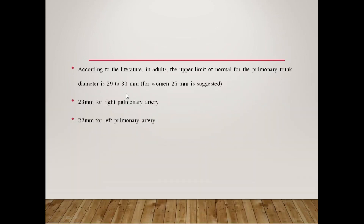According to the literature, in adults the upper limit of normal for the pulmonary trunk is 29 to 33 mm, 23 mm for the right pulmonary artery, and 22 mm for the left pulmonary artery.